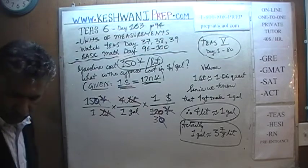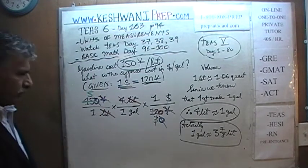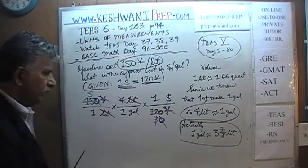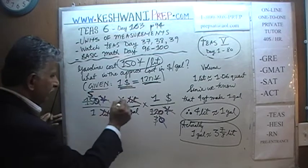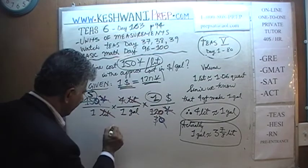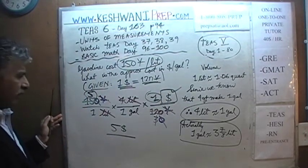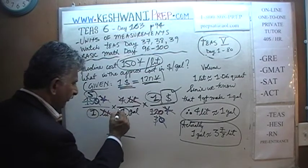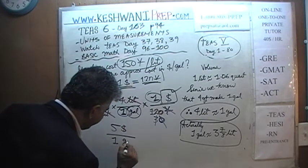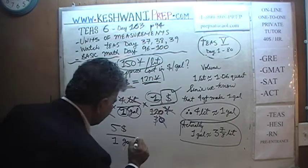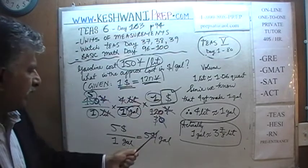Divide top and bottom by 3: 3 goes away, 3 goes away, and 15 becomes 5. Let's take an inventory of what we are left with. Nothing remains in the cancelled units — we're left with 5 times 1 on the top, which is 5, with the unit dollar. On the bottom we have 1 times 1, which is 1, with the unit gallon. So the answer is 5 dollars per 1 gallon — that's 5 dollars per gallon. The approximate cost of gasoline is 5 dollars per gallon.